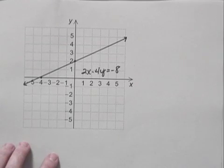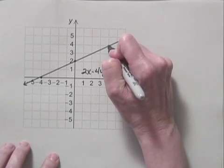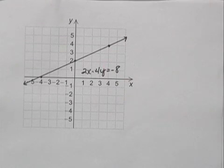Let's look at our graph. We do have that point on the graph, so that's a check that we've drawn the graph correctly.